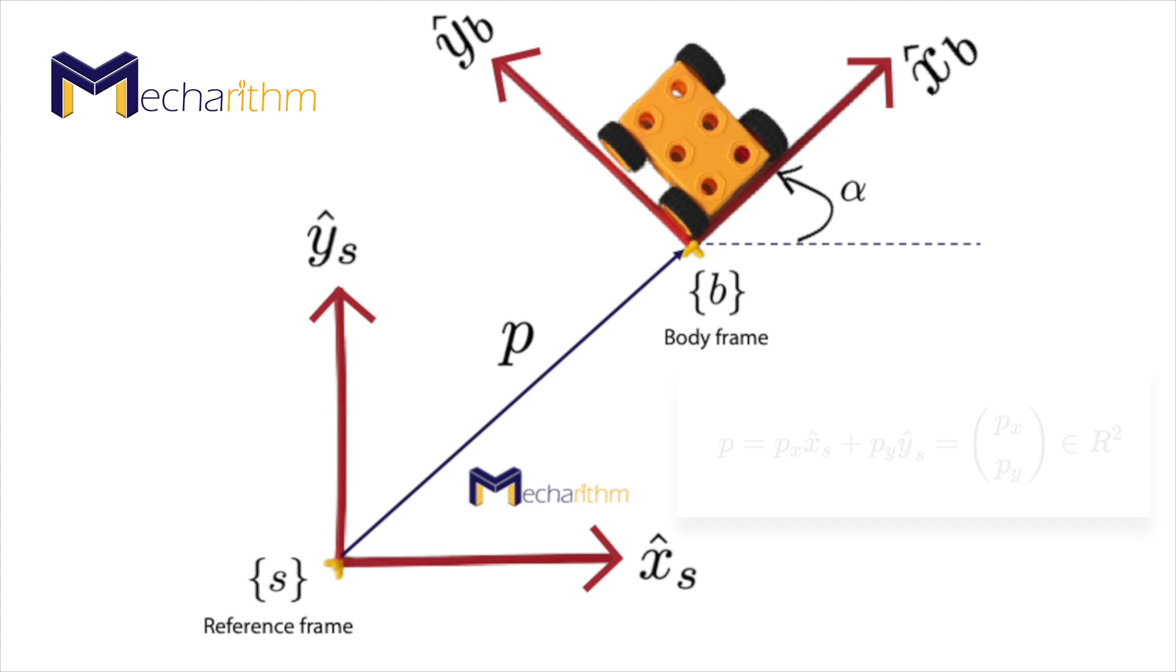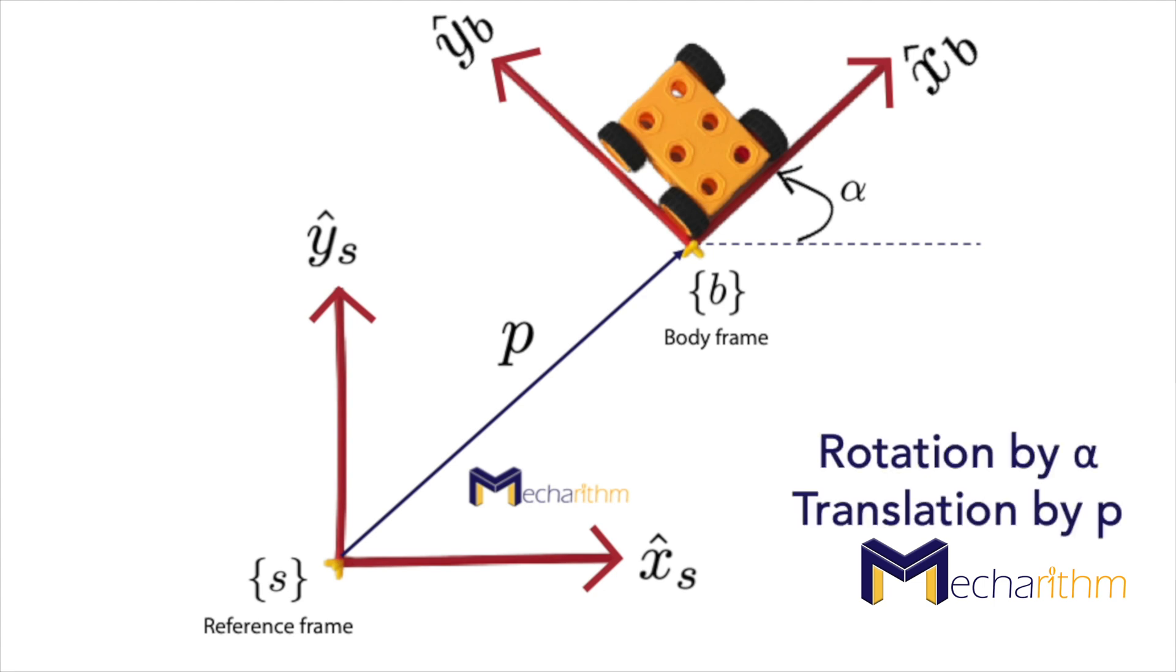Thus, the configuration of the toy car can be represented by the pair (R, P), which is the description of the orientation and position of the B frame with respect to the S frame. This means that base frame S can be coincident with the body frame B by rotating the base frame coordinates around the z-axis by alpha and then translating the origin by P.